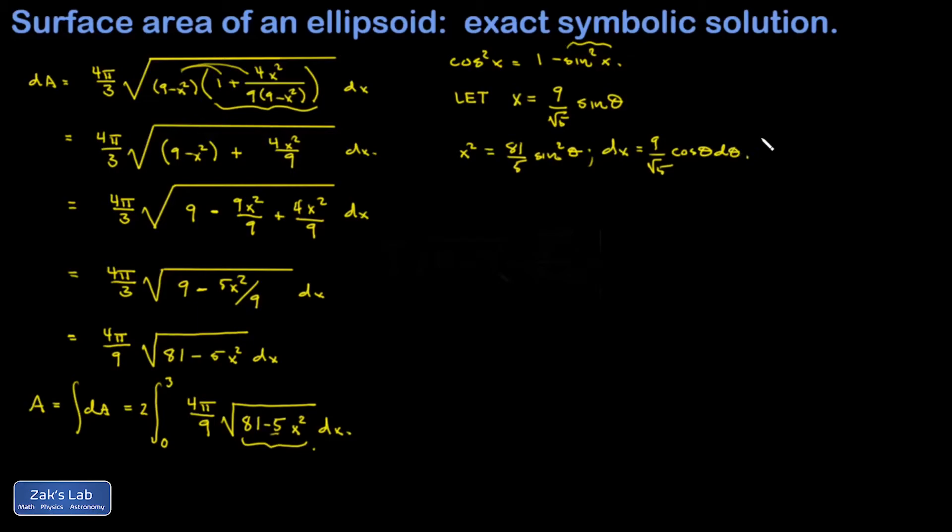I'd like to transform my limits of integration so I can forget about x for the rest of the problem. When x is 0, the sine of 0 is 0, so theta must be 0. When x is 3, I would have 3 equals 9 over root 5 sine theta. Cancel a factor of 3, and I end up with root 5 over 3 equals sine theta. So theta is the inverse sine of root 5 over 3. That becomes my new upper limit for the integral.